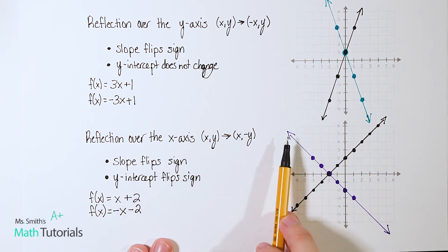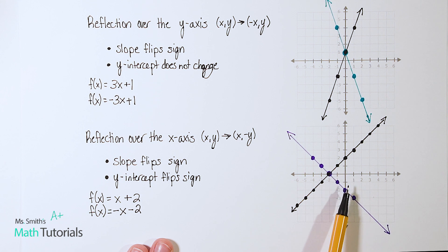So notice how with the new purple line we kept the same x-intercept. Our y-intercept flip sign and our slope also flipped our sign.